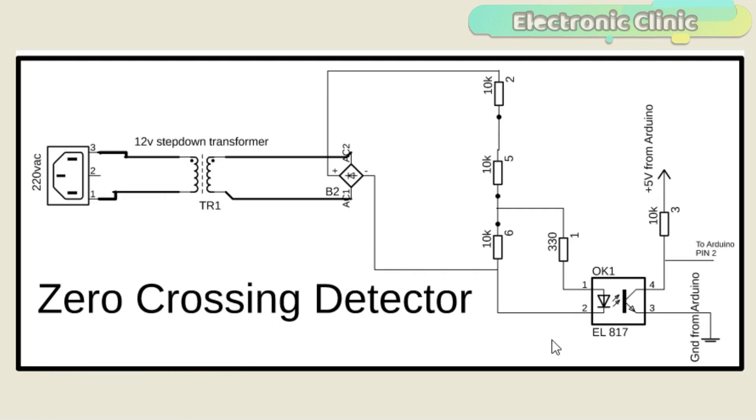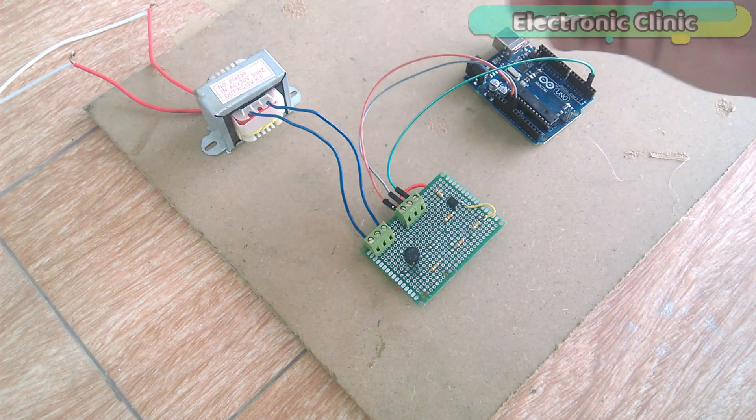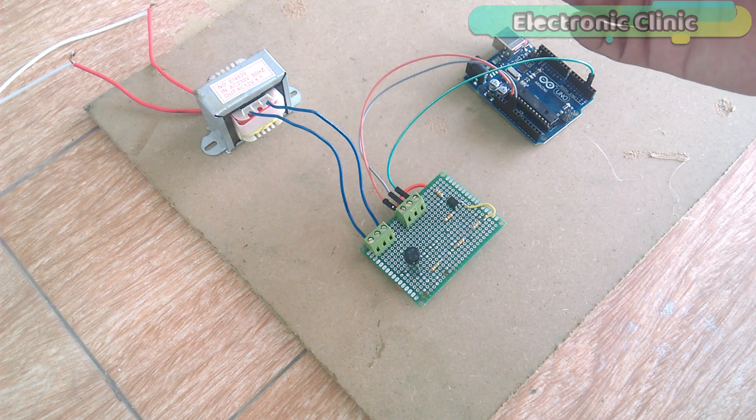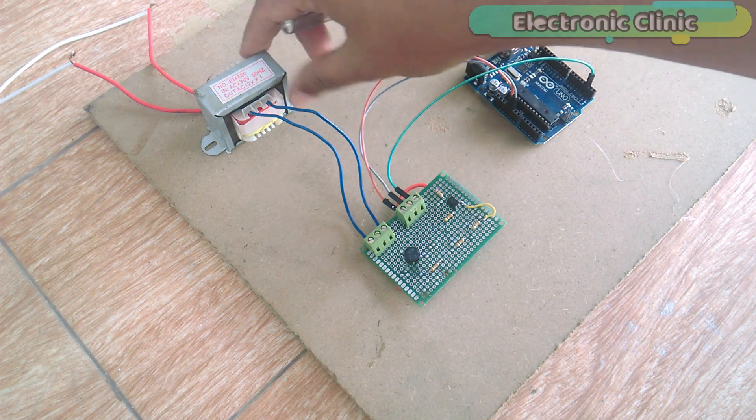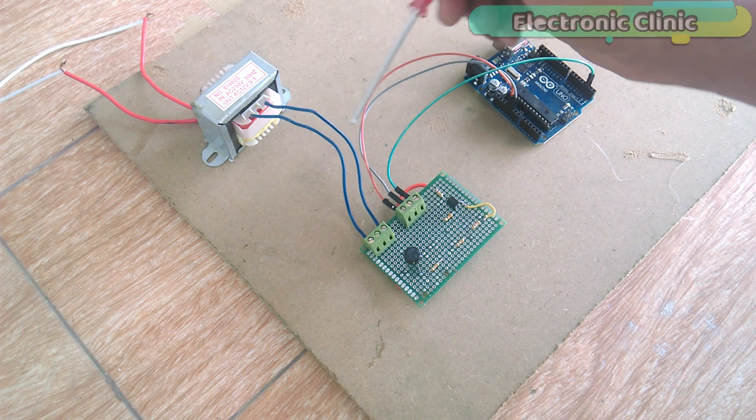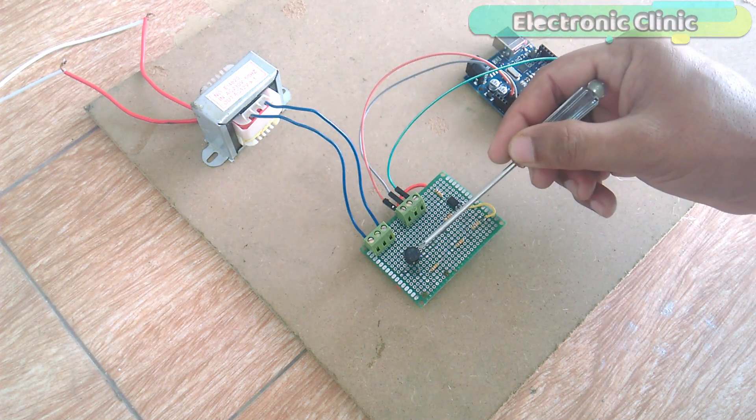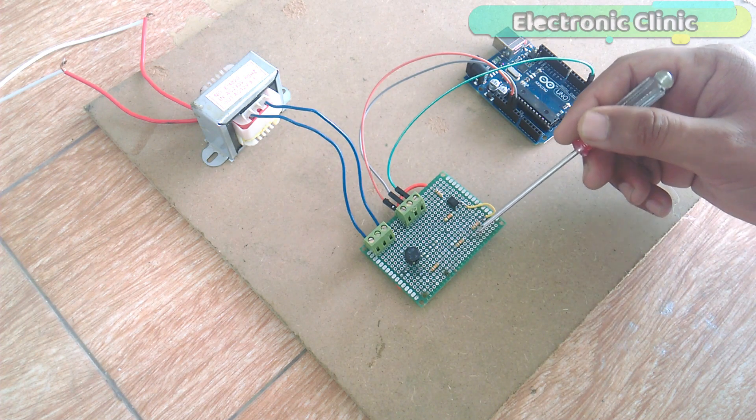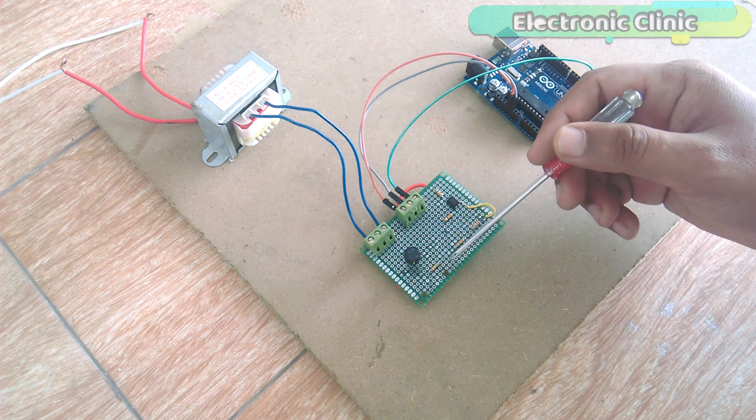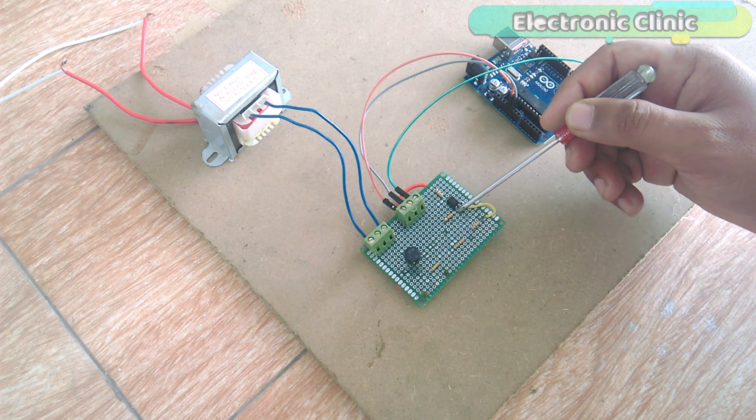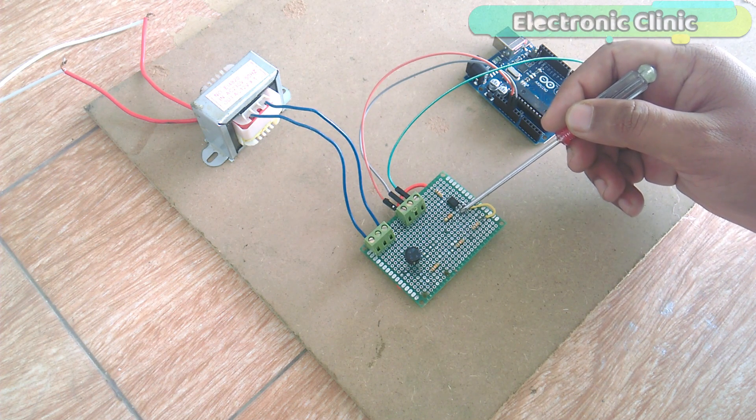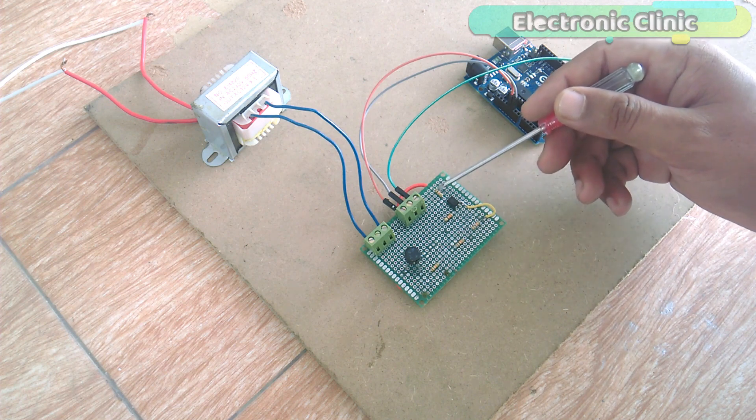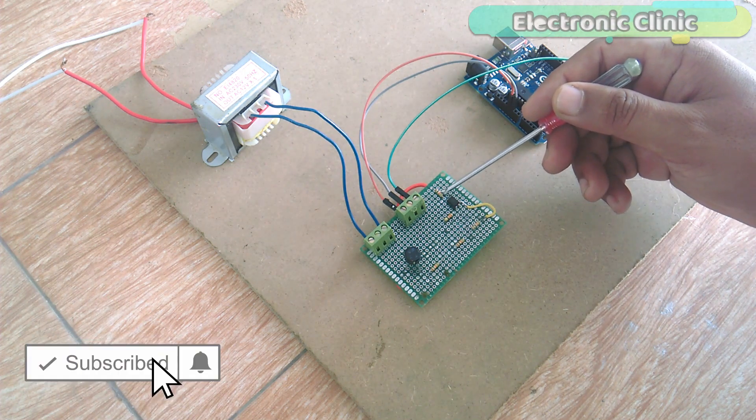All the connections are exactly the same as explained in the circuit diagram. 12 volt step-down transformer secondary wires are connected with the AC input legs of the bridge rectifier. Three 10K resistors are connected in series with the positive leg of the bridge rectifier. A 330 ohm resistor is connected with the anode pin of the EL817 while a 10K resistor is connected with the collector of the EL817.